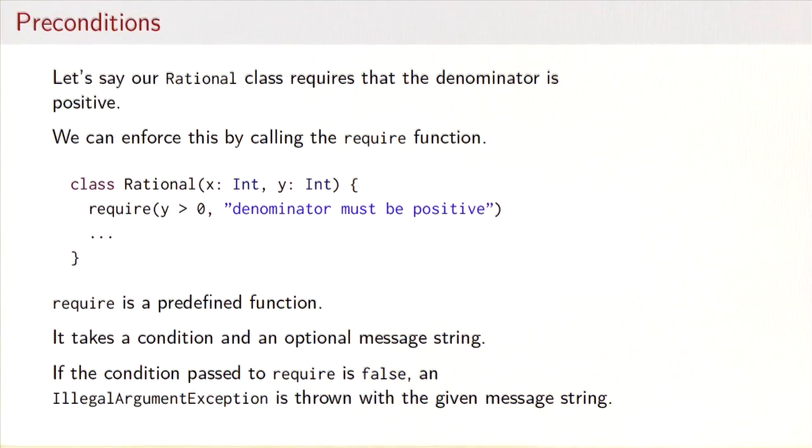The require function that we've called on class rational is actually a predefined function. It takes a condition, that's the test, and an optional message string. In our case that was 'denominator must be positive'. If the condition here is false, then require will throw an illegal argument exception and that exception will contain the message string.